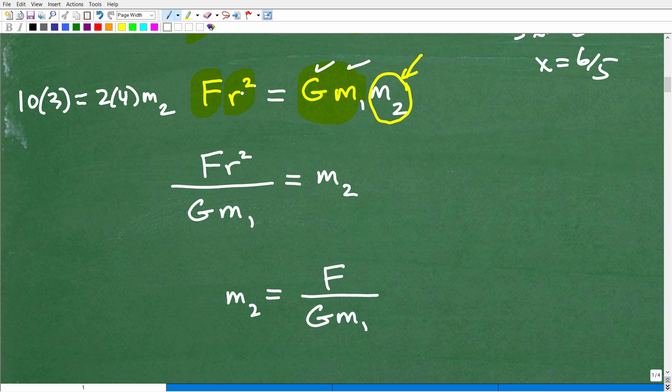So this would be 30 over 2 times 4, that's 8 times m2. So to get my m2, I'm just going to divide both sides of the equation by 8. And that's effectively what we're going to do here.